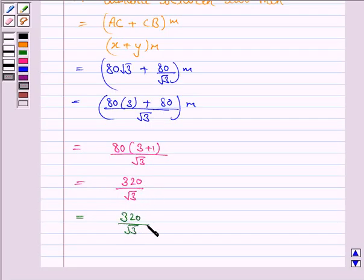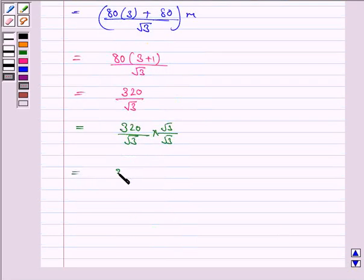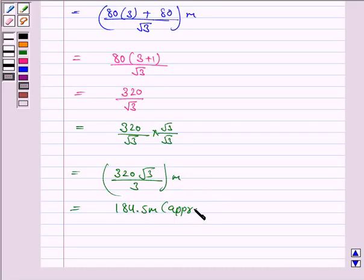80 into 4 is 320 upon root 3. Multiplying and dividing by root 3, we have 320 upon root 3 into root 3 by root 3. We have 320 into root 3 upon 3 which is equal to 184.5 approximately.